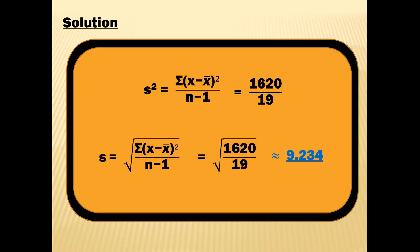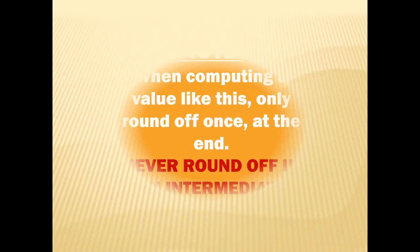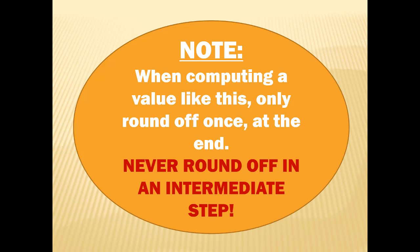Notice that I left the fraction 1,620 over 19 underneath the square root. Your calculators can take the square root of a fraction. What we don't want to do is divide 1,620 by 19 to get a decimal, round it off, and then take the square root — we don't want to round off in the middle of a problem. This is called the propagation of error: once you round a value off, it's not quite right; if you use that to compute another value, that value is also not quite right. So remember: only round off once at the very end, never in an intermediate step.